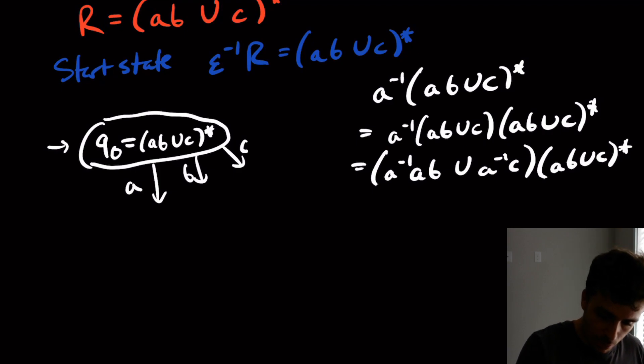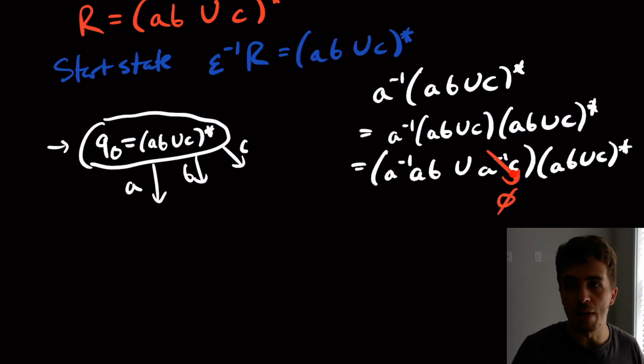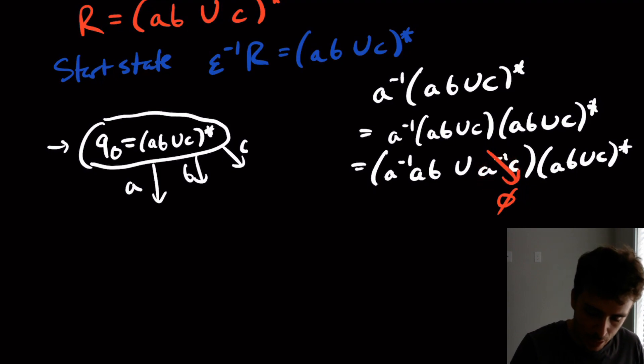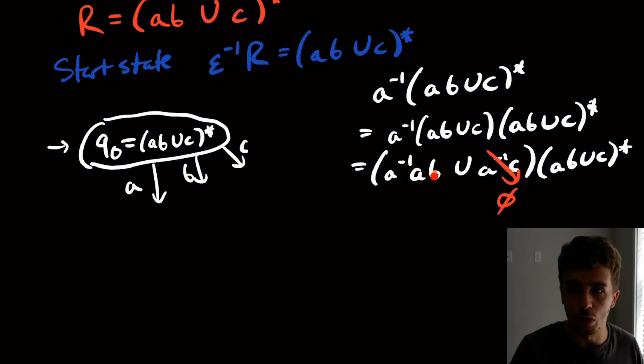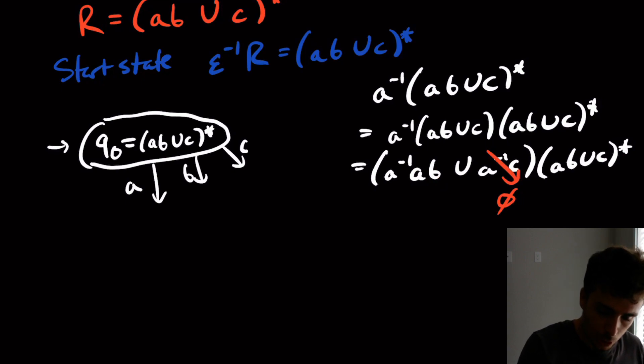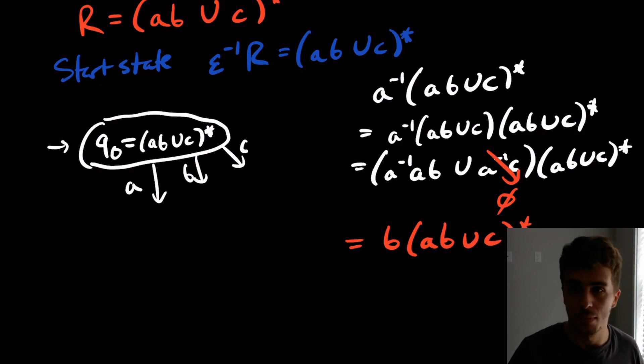This term right here is going to go to empty set because if you take away an A away from everything in C, that's not going to leave with anything. So this is going to be the empty set. And the A inverse A is going to cancel right here, so we're just going to get B here. So B union the empty set is just going to be B. So the result of this whole thing is B and then concatenated with AB union C star.